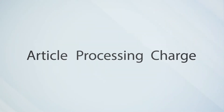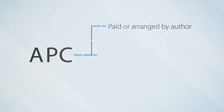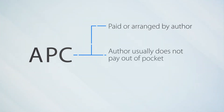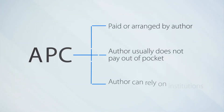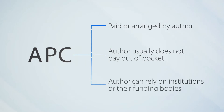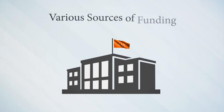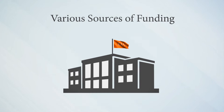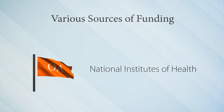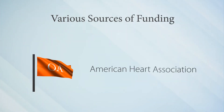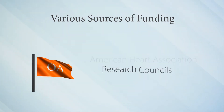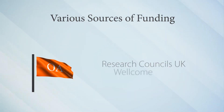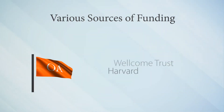In open access publishing, there's usually an article processing charge, or APC. The APC is paid or arranged by the author, but they usually do not pay out of their own pocket — they can rely on their institutions or funding bodies. Many institutions have created dedicated funds to cover APCs, and funders from all over the world have made open access fees part of their general funding, with clear open access policies that mandate a level of openness to all the research they help publish.